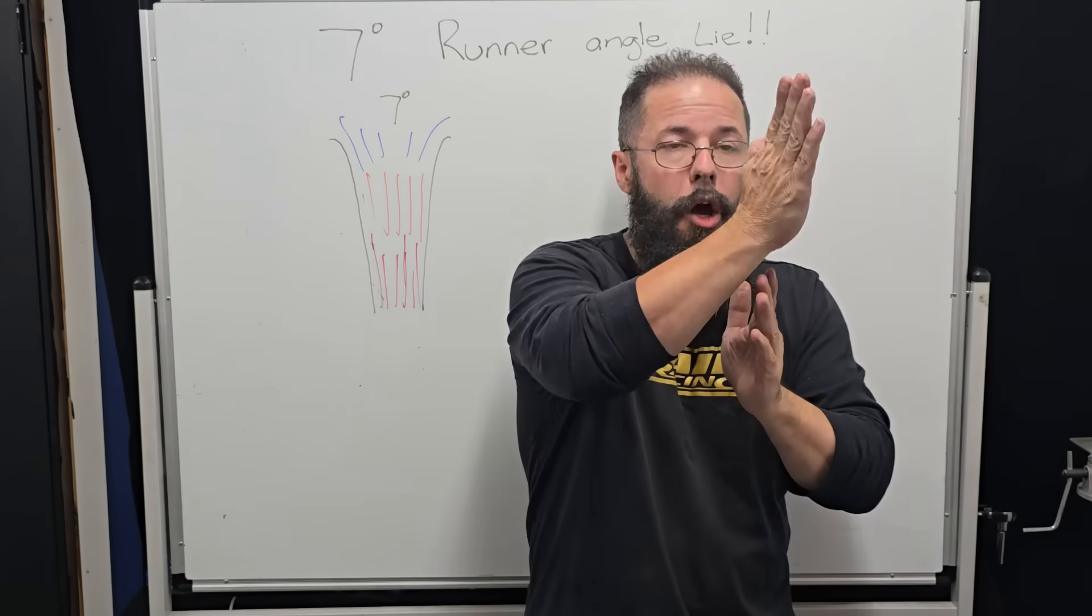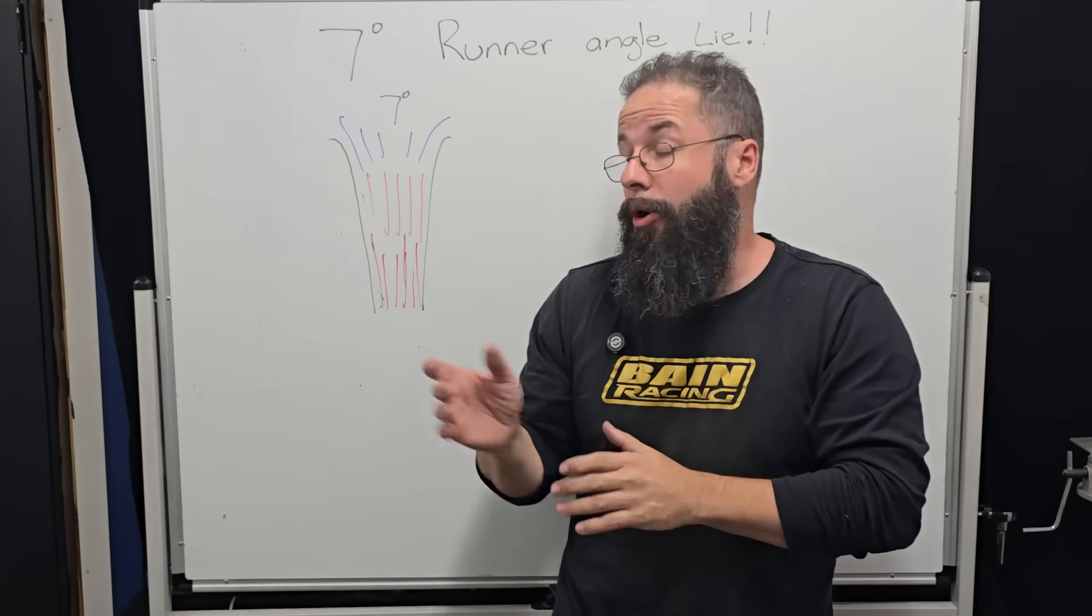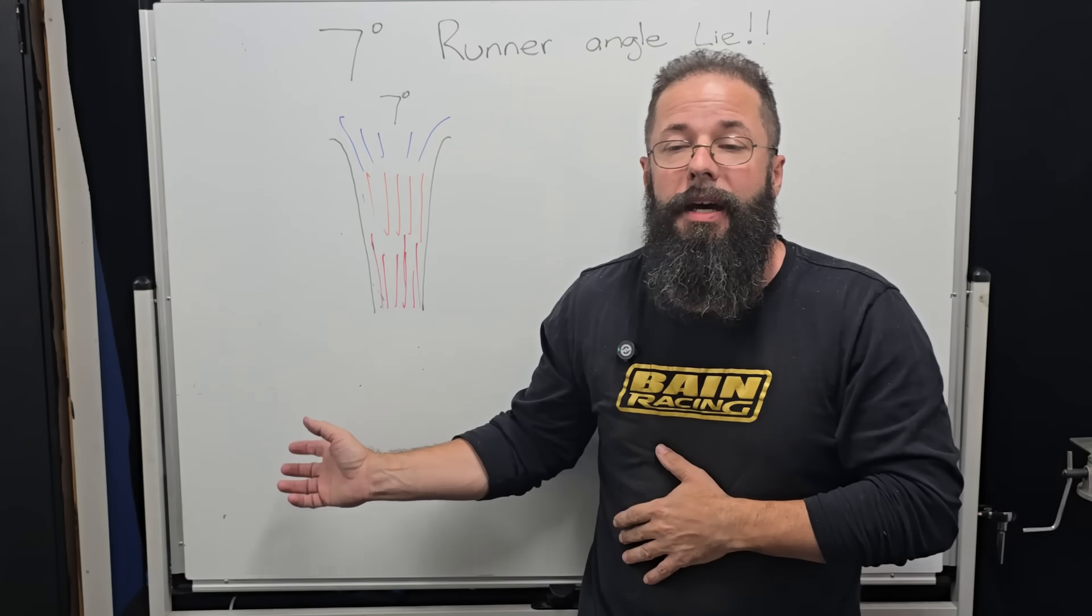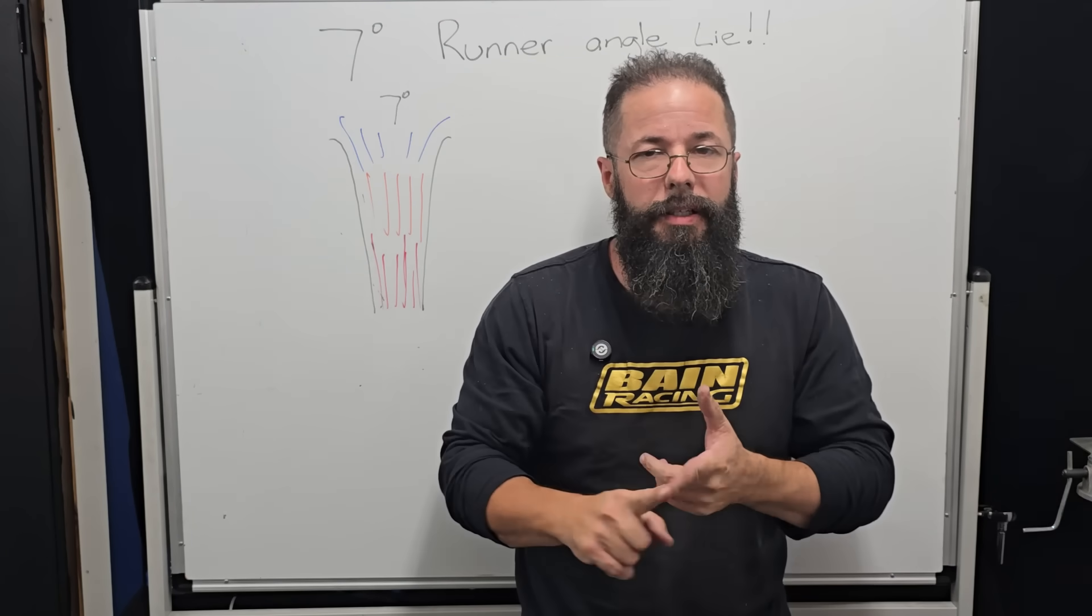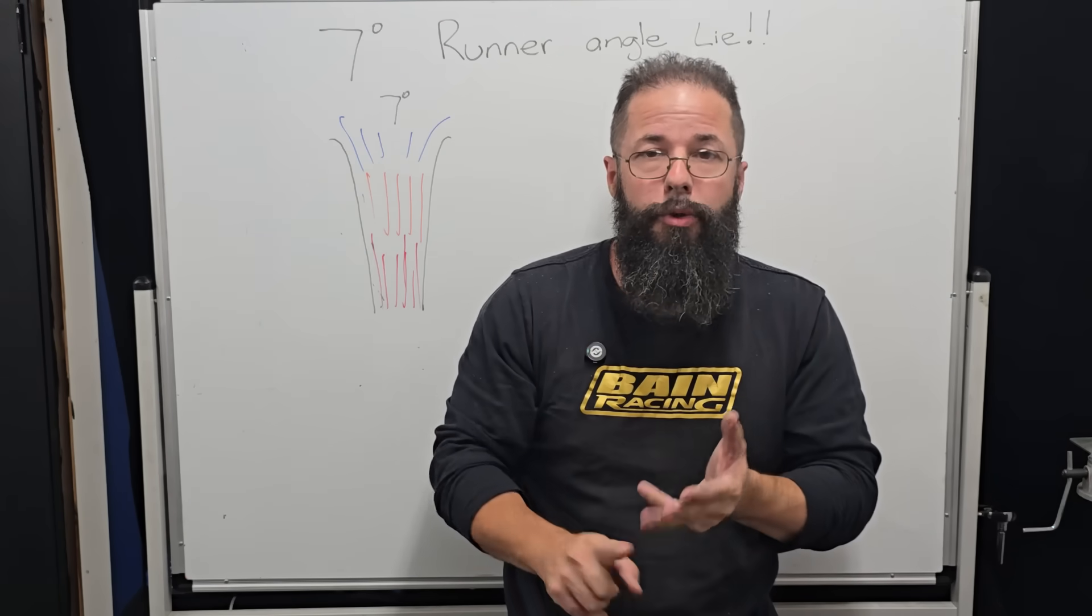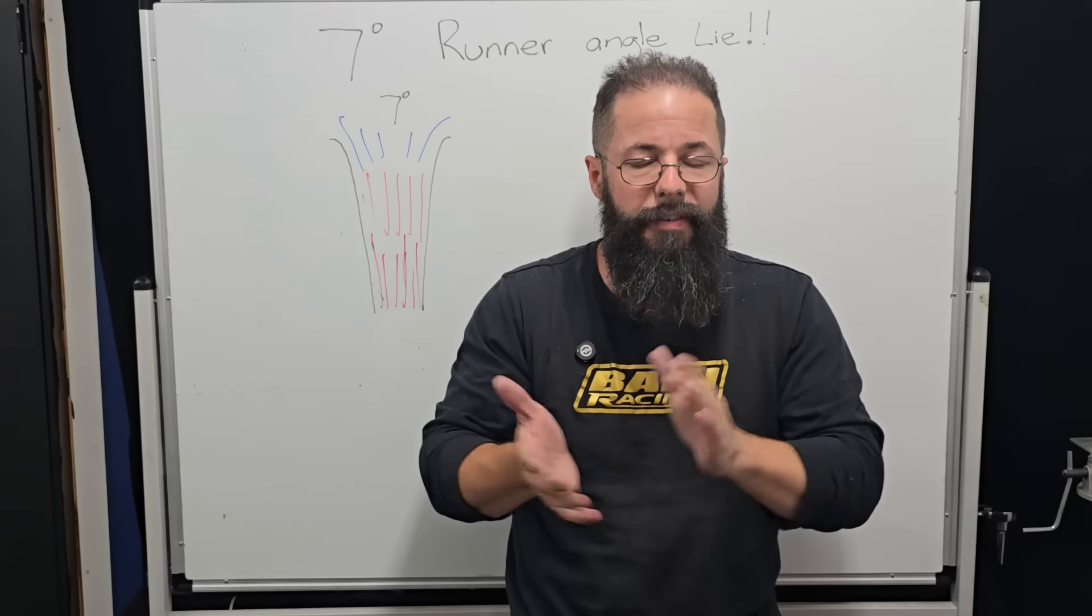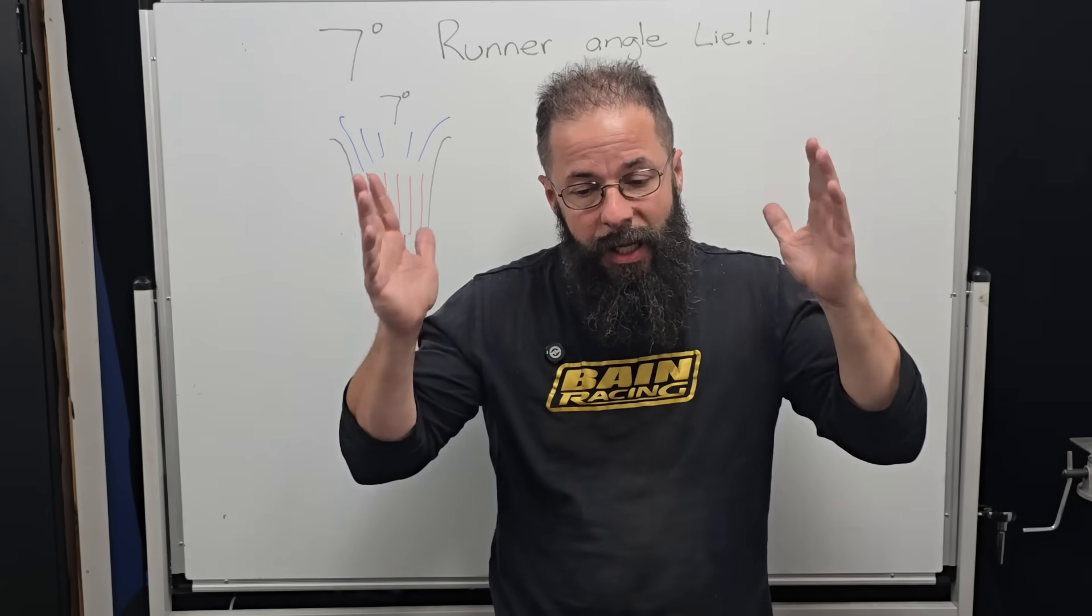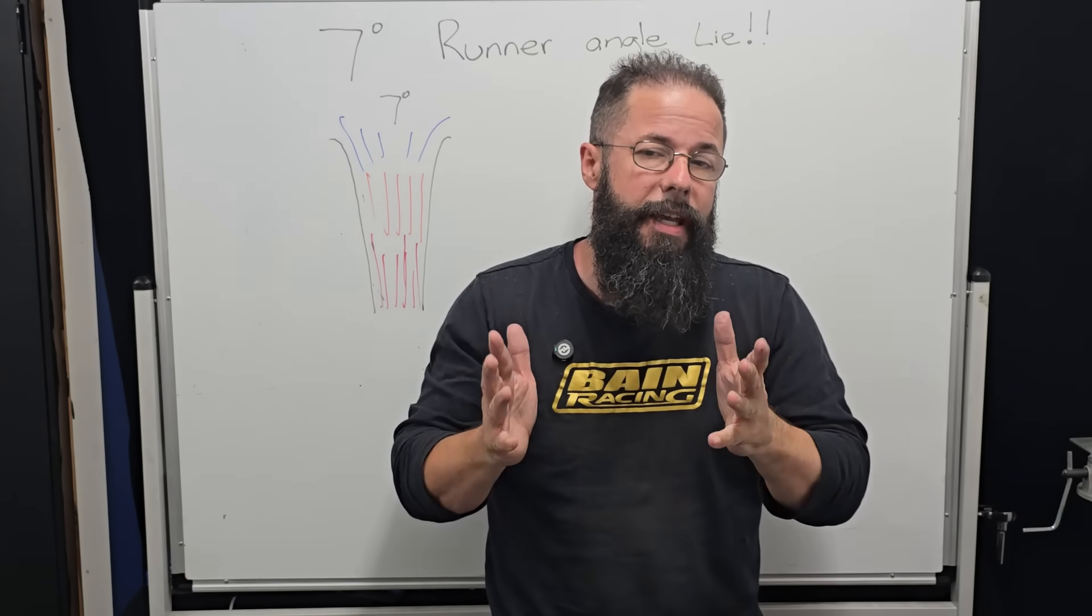We have to look at the whole combination and we have to look at the primary induction length as one unit, meaning from the opening to the valve. So just saying that we need seven degrees taper in a runner without saying, well what's the cylinder head, where's the MCA, what are we using it for and so on and so many other factors becomes very very misleading.